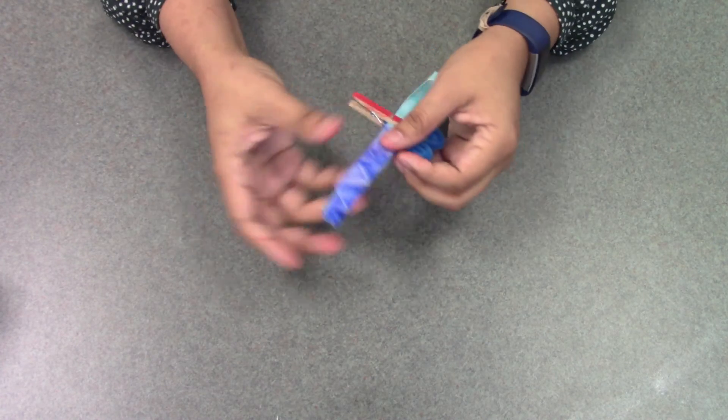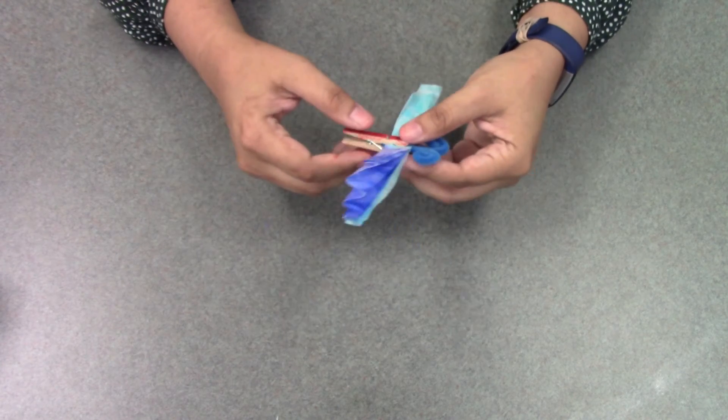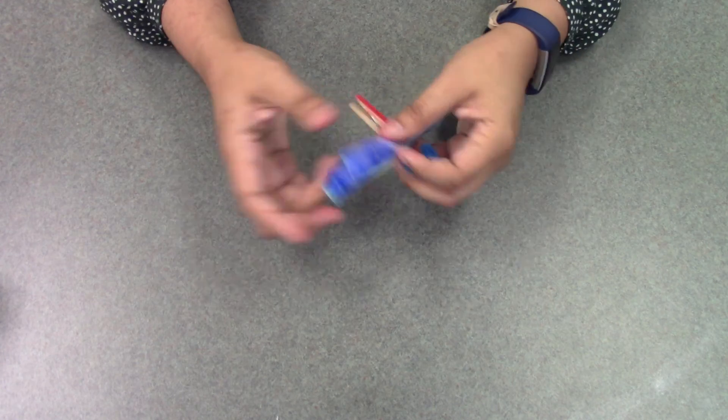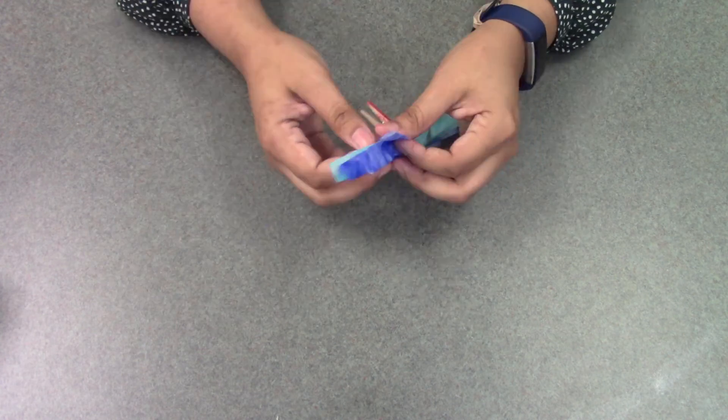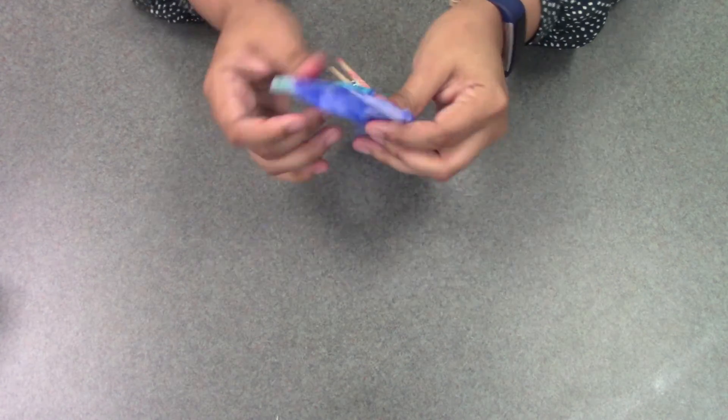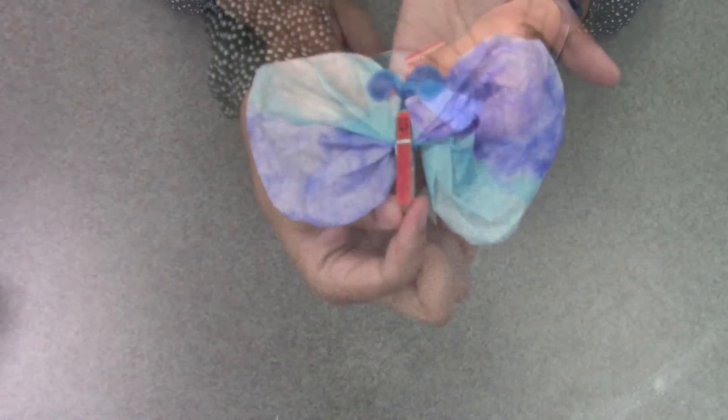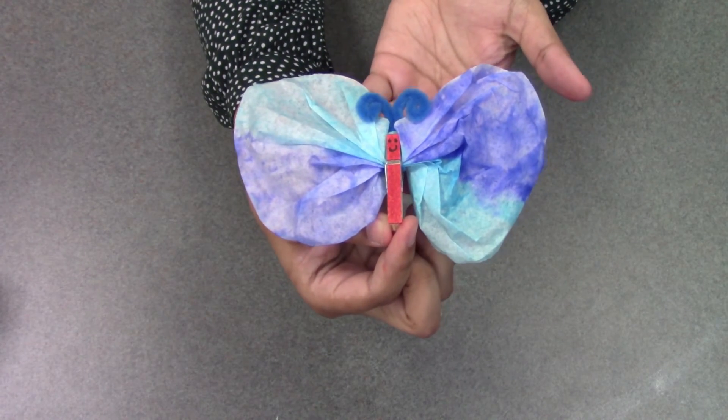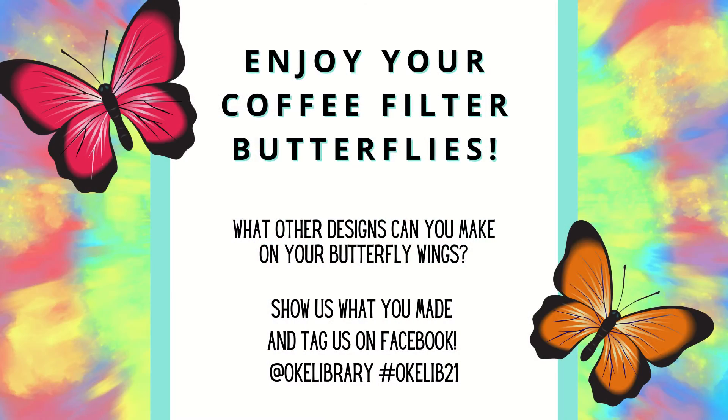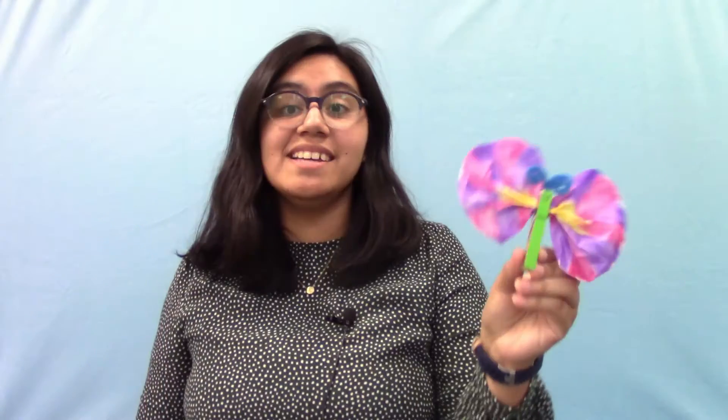And lastly, we're just going to open up and spread out the wings of the butterfly. So the sides of the coffee filter. Alright, so then your coffee filter butterfly is all done. So that is how you make your coffee filter butterflies.